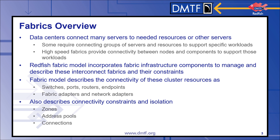Today's data center connects many servers to needed resources or other servers within that data center. Some require connecting groups of servers and resources to support specific workloads. High-speed fabrics provide the connectivity between the server nodes and required components for those workloads. The Redfish fabric model incorporates fabric infrastructure components to manage and describe these interconnect fabrics and the constraints within that fabric. The fabric model describes the connectivity of these cluster resources as switches, ports, routers, and endpoints. Resources are connected to the fabric with fabric adapters or network adapters. The fabric model also describes connectivity constraints and isolation on the fabric with zones, address pools, and connections.